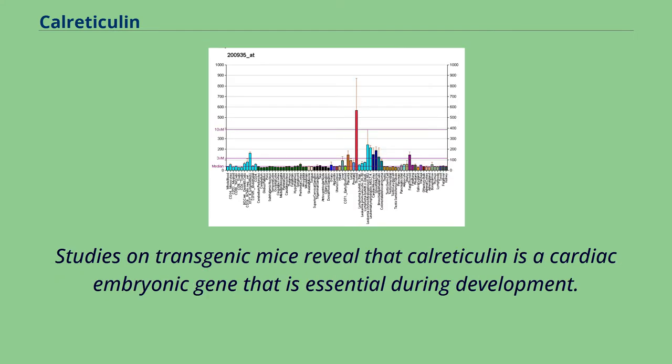Studies on transgenic mice reveal that calreticulin is a cardiac embryonic gene that is essential during development.